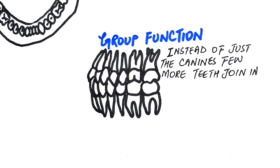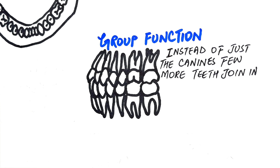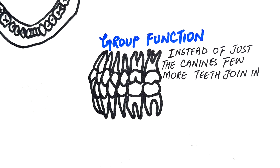Group function, on the other hand, occurs when not just the canine but also multiple teeth make contact during lateral movements on the working side. This contact can involve the canine along with premolars, molars, or all of them together. In group function, the posterior teeth remain in contact and do not fully disengage on the working side.